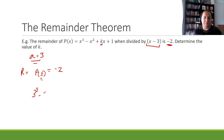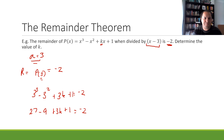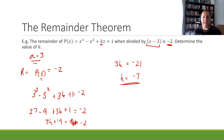So let's substitute 3 into our polynomial: 3³ − 3² + 3k + 1 = −2. That gives us 27 minus 9 plus 3k plus 1 equals negative 2. So 27 minus 9 is 18, and 18 plus 1 is 19, giving us 3k + 19 = −2. Subtracting 19 from both sides: 3k = −21, so k must be negative 7.